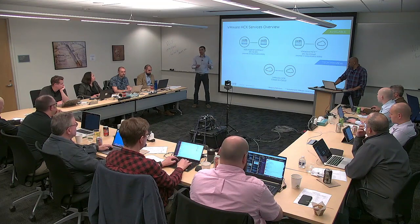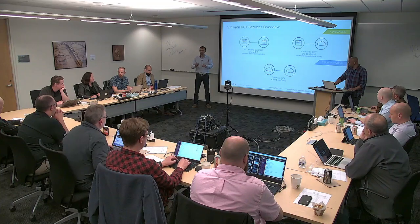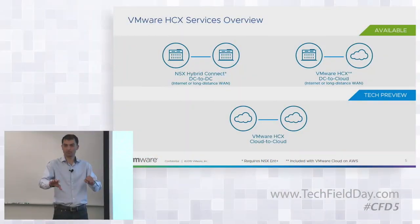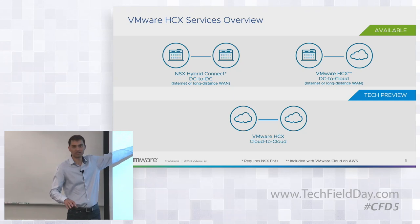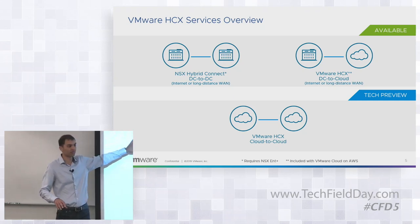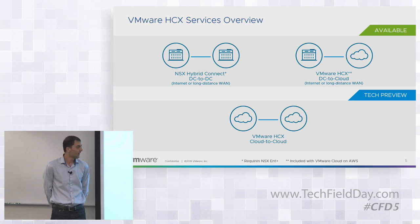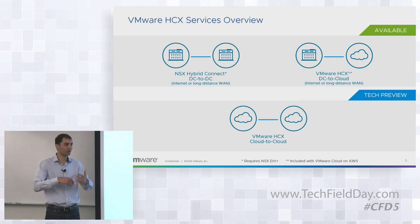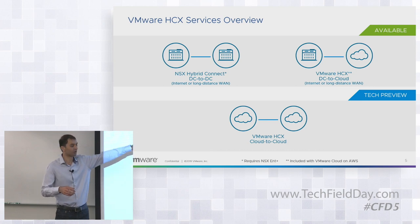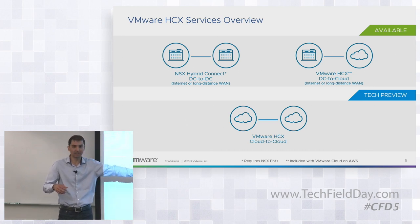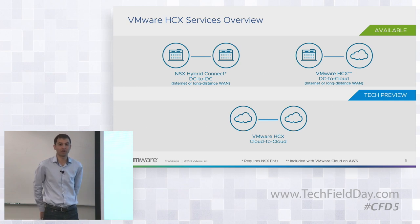The premise around HCX is multi-site hybridity. You have legacy sites and may want to move workloads to your modern private cloud sites — that's the data center to data center use case within your infrastructure. There is also moving out to a cloud provider like VMware Cloud on AWS, and we have many other cloud providers supported. Mobility is really an ongoing thing, and that's where you want to support modern to modern — the modern could be a private cloud or a public cloud. So it's really a cloud-to-cloud type of offering.